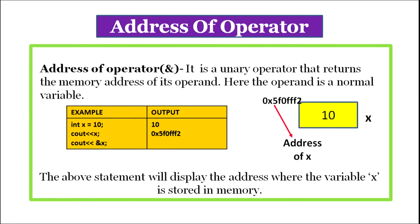The address-of operator is indicated by the symbol ampersand (&). It is a unary operator that returns the memory address of its operand, where the operand is a normal variable. For example, given 'int x = 10', a 2-byte memory space is allocated at a particular address and value 10 is stored there, referred to by name x. When we say 'cout << x', 10 will be displayed. But when we say 'cout << &x', it will display the address of x — the address where memory is allocated to x.